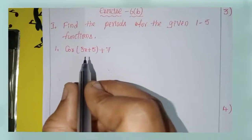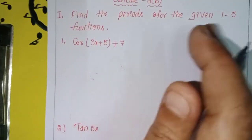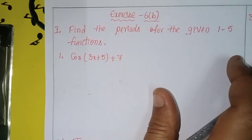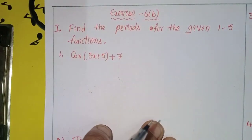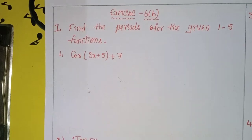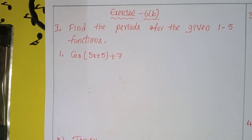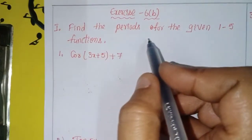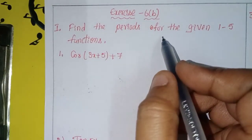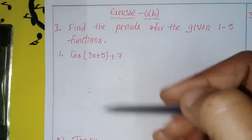This is Shahin and welcome to my channel. Today we will discuss Intermediate First Year 1A, Chapter 6, Trigonometric Ratios of Two Transformations, Exercise 6B, first problem. Find the periods of the given functions.